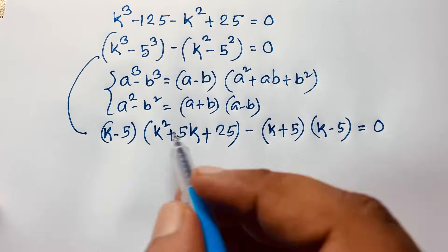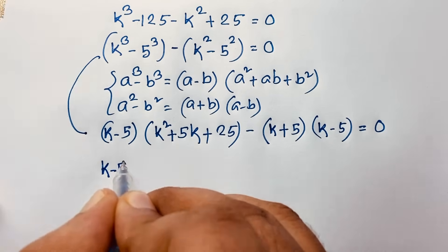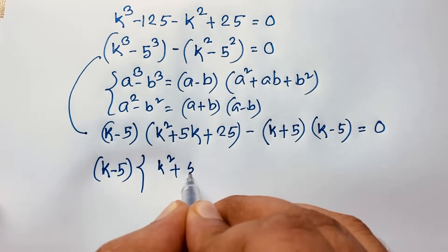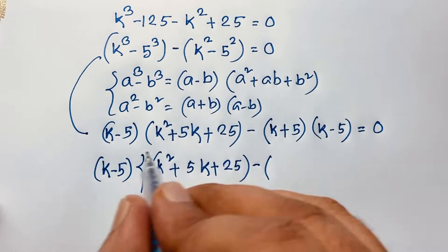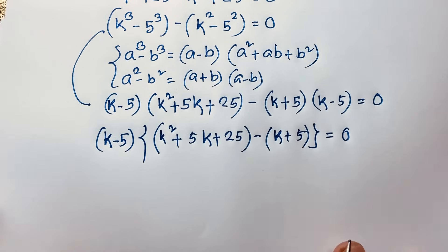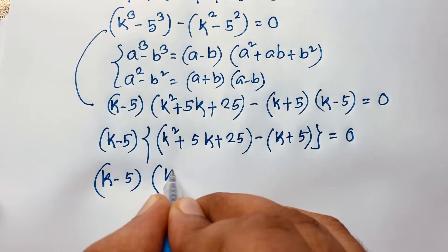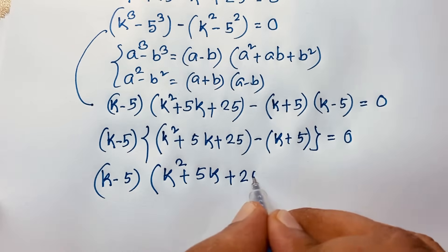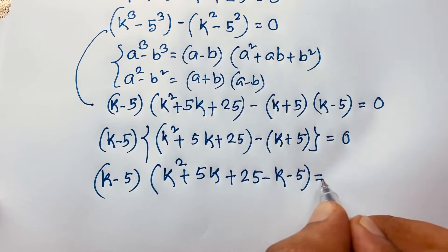Here, k minus 5 and this is k minus 5, so k minus 5 is common. Taking k minus 5 as common: dividing through gives k squared plus 5k plus 25, and with the negative sign, dividing gives k plus 5, equal to 0. So k minus 5 times (k squared plus 5k plus 25 minus k minus 5) equals 0. Simplifying: 5 minus k gives 4k, and positive 25 minus 5 gives 20, equal to 0.